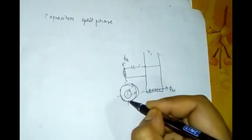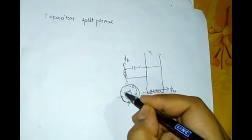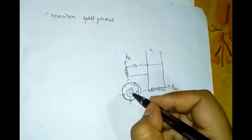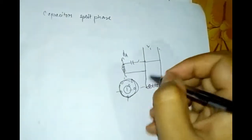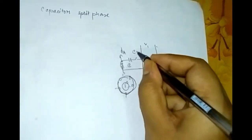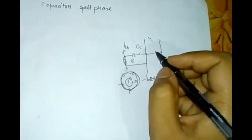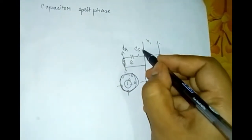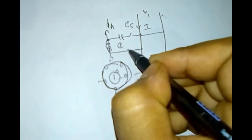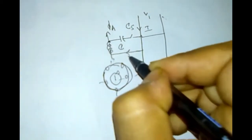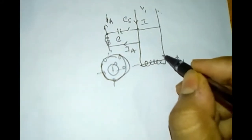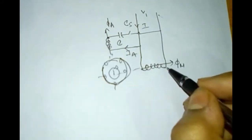In the circuit, there is a capacitor and a centrifugal switch. The main current passes through it. The auxiliary winding carries a current of I-a, and the main winding carries a current of I-m.